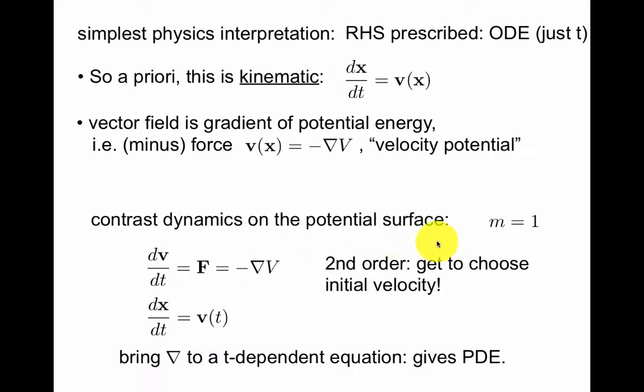Contrast dynamics on the potential surface. If you set the mass equal to 1, then Newton's law is acceleration equals force. And force, if it's conservative, then the force is minus the gradient of the potential energy. Now, this is a second-order differential equation. So you get to choose the initial velocity.